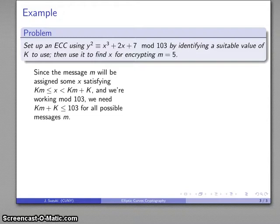Since the message is assigned some value of x between km and km + k, and we're working mod 103, nothing can be larger than 103. I need to make sure that km + k ≤ 103 for all possible values of my message.